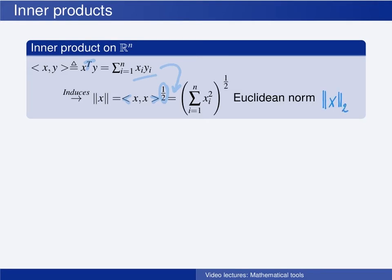So the Schwarz inequality, which gives us a relationship between the inner product between two elements x and y and their norms, only holds for the Euclidean norm.